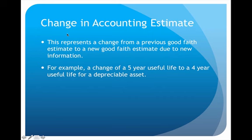The second type of change is change in accounting estimate. Even though we try to be as objective as possible in accounting, sometimes we do have to make estimates. When we make an estimate, we try to make it in good faith using our experience and expertise. But sometimes circumstances change and we may find that our original estimate needs to be revised. For example, if we had a depreciable asset and estimated a five-year useful life but then decide it's not going to last as long — that's a classic example of a change in estimate, made properly but revised due to new information.